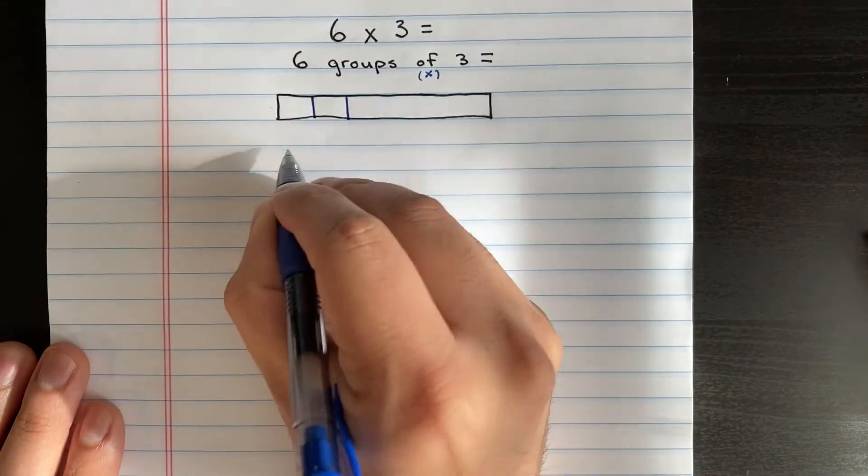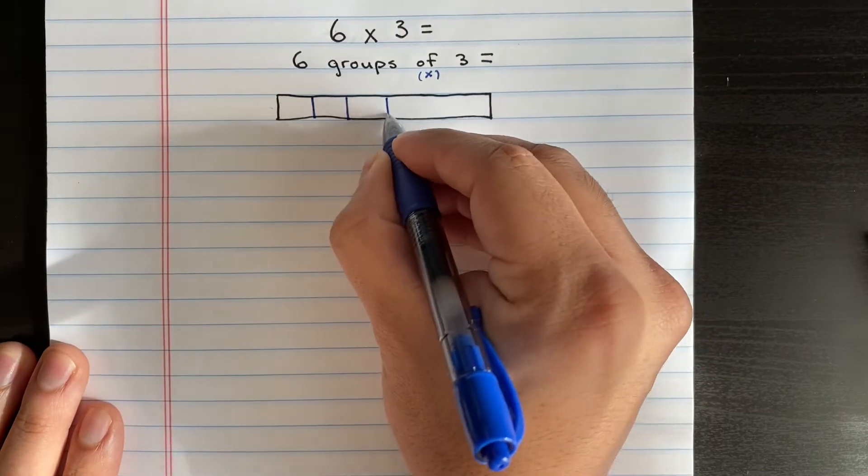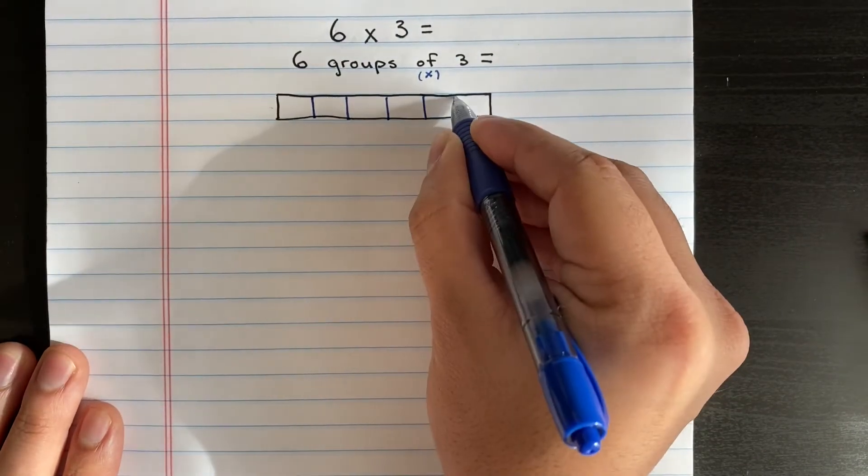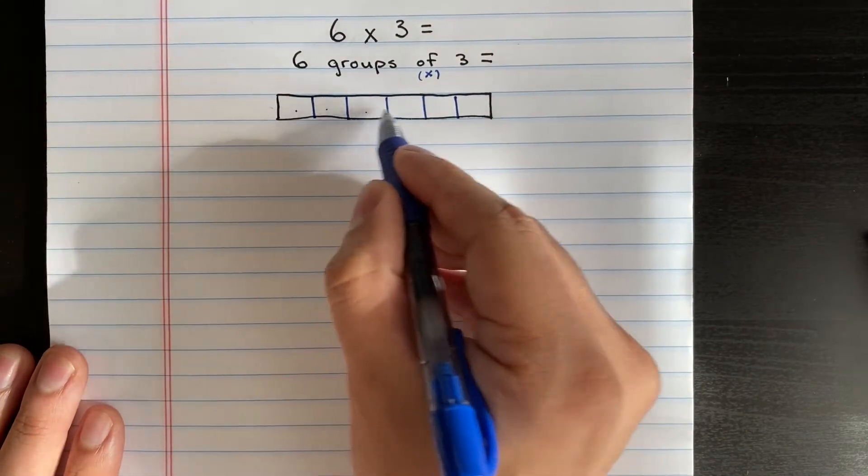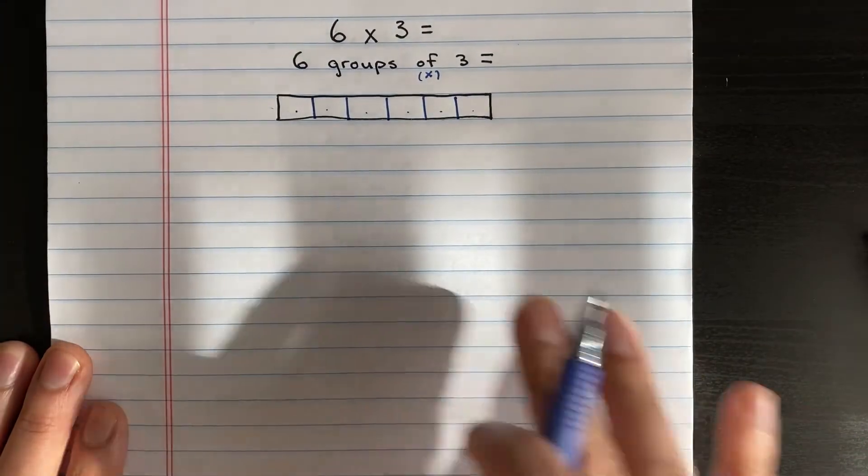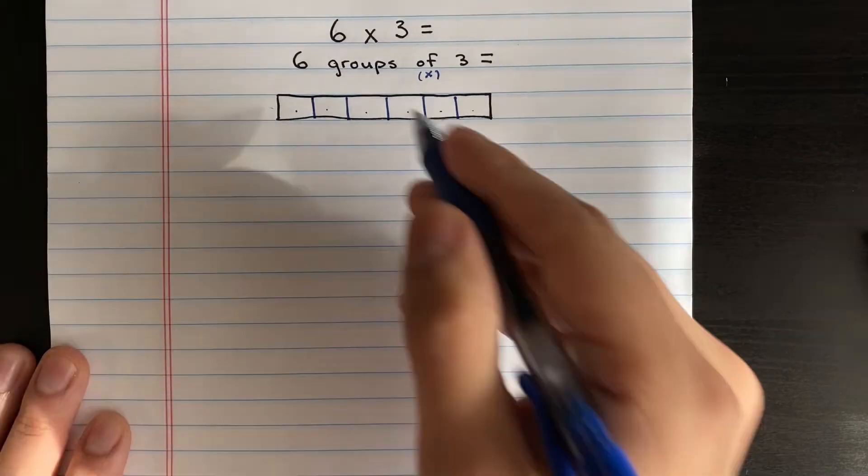One... six pieces: one, two, three, four, five, six. Yep, perfect! I have my six groups right there.